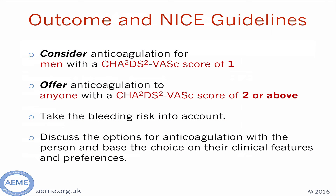Here is what NICE have to say about anticoagulation for patients in atrial fibrillation based on their CHA2DS2-VASc score. Any patient with a score of zero should not be considered for anticoagulation. Any patient with a score of one should be considered for anticoagulation. Any patient with a score of two or above — which includes our patient — should be offered anticoagulation. Remember, bleeding risk always has to be taken into account, and that is what the HAS-BLED score is useful for.